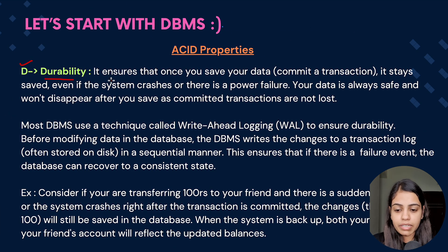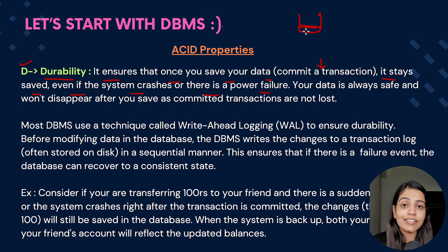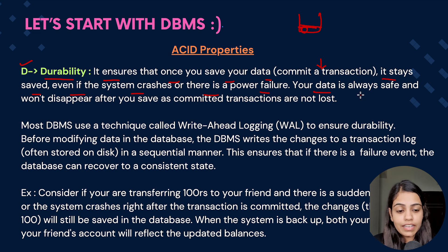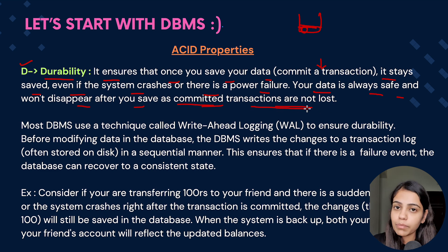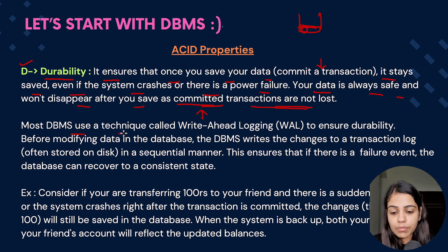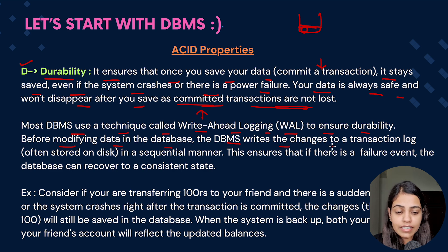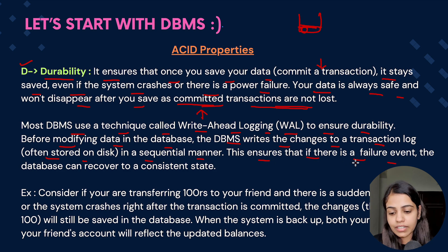Let's learn about D, that is Durability. It ensures that once you commit a transaction, it stays saved even if the system crashes or there is a power failure. Your data is always safe and won't disappear after saving, as committed transactions are not lost. Most DBMS use a technique called Write-Ahead Logging (WAL) to ensure durability — before modifying data, the DBMS writes changes into a transaction log stored on disk sequentially, so if there is any failure, the database can recover to a consistent state.